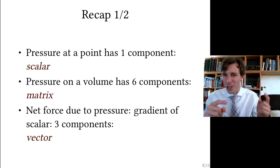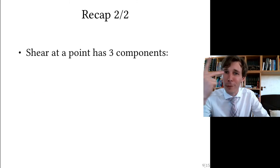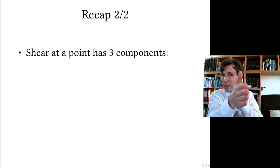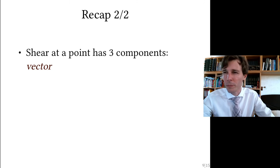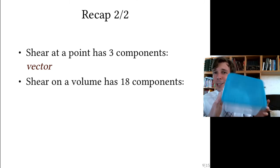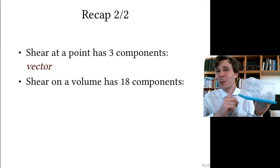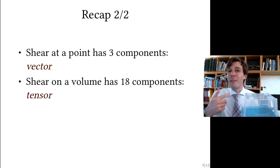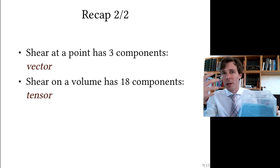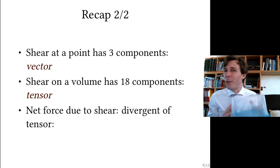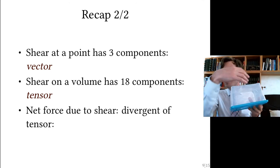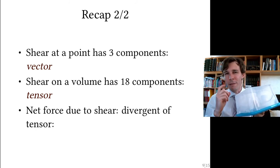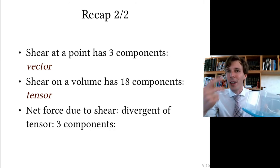Now for shear: at a point, shear has three components — it is a vector field pointing in a specific direction with some magnitude. When we apply shear to a volume, each of the six faces of the cube has a three-component vector, giving 18 components in total. This is a vector made out of vectors, which we call a tensor. To find the net force due to shear, we take the divergence of the shear tensor, which reduces those 18 values down to three components — a vector field.